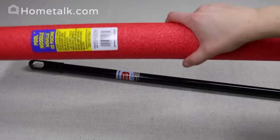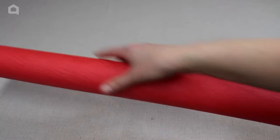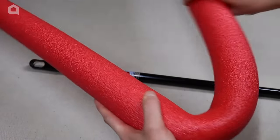We are going to start this craft off by removing any stickers from your pool noodle. After the sticker is removed, bend the pool noodle to straighten it slightly.